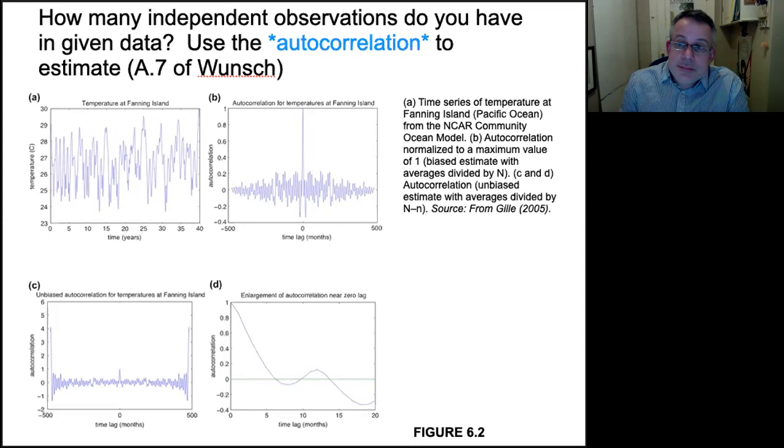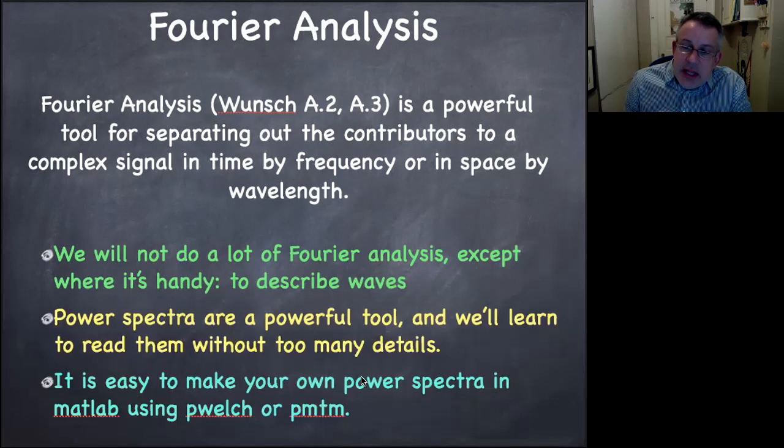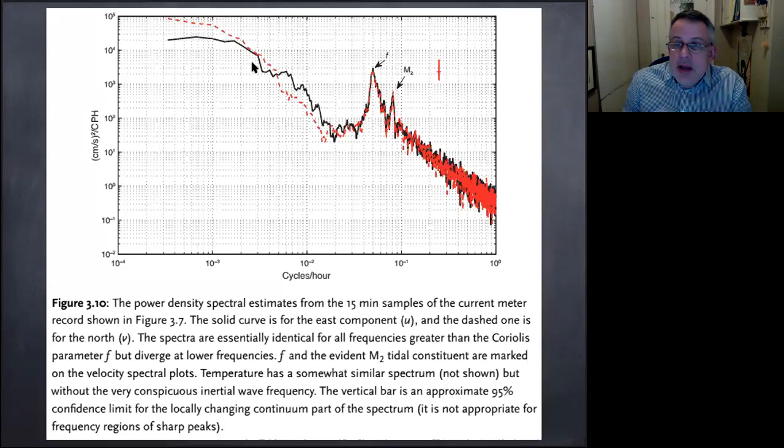We'll discuss more in Appendix 7 and Lunch. A lot of the Appendix in Lunch talks about Fourier analysis, which is a really powerful tool for separating out the contributions to complex signal by separating by frequency or separating in space by wavelength. We're not going to do a whole lot except for when we get to waves at the very end of the class. The one exception are power spectra, which are a really powerful tool. And we've already started talking about how to read them. We'll look at more and we'll read more of them without understanding too much about how they're generated. But it is really easy to make your own power spectra from a time series or from a spatial record in MATLAB using these two functions, PWELCH or PMTM.